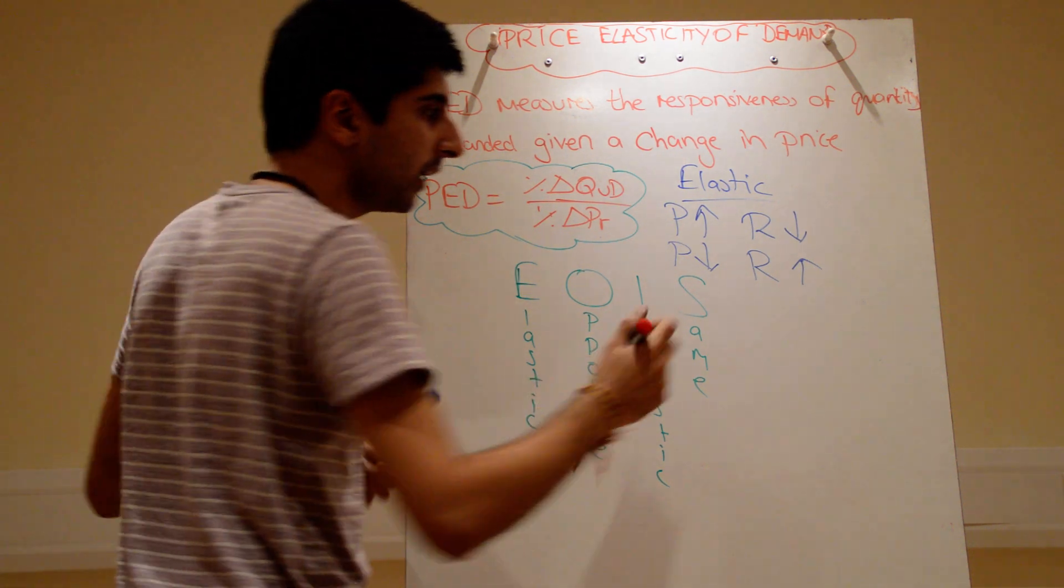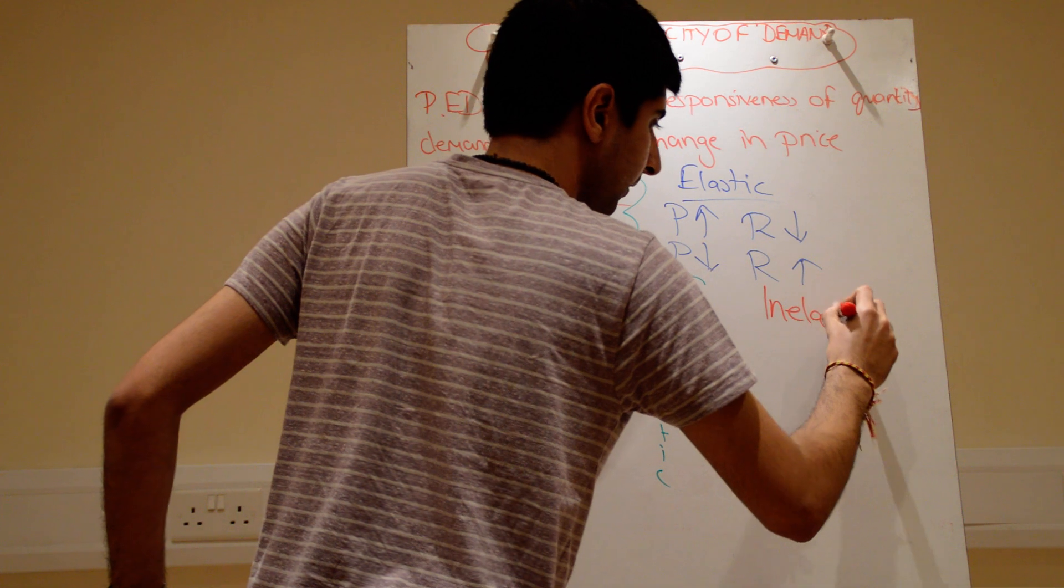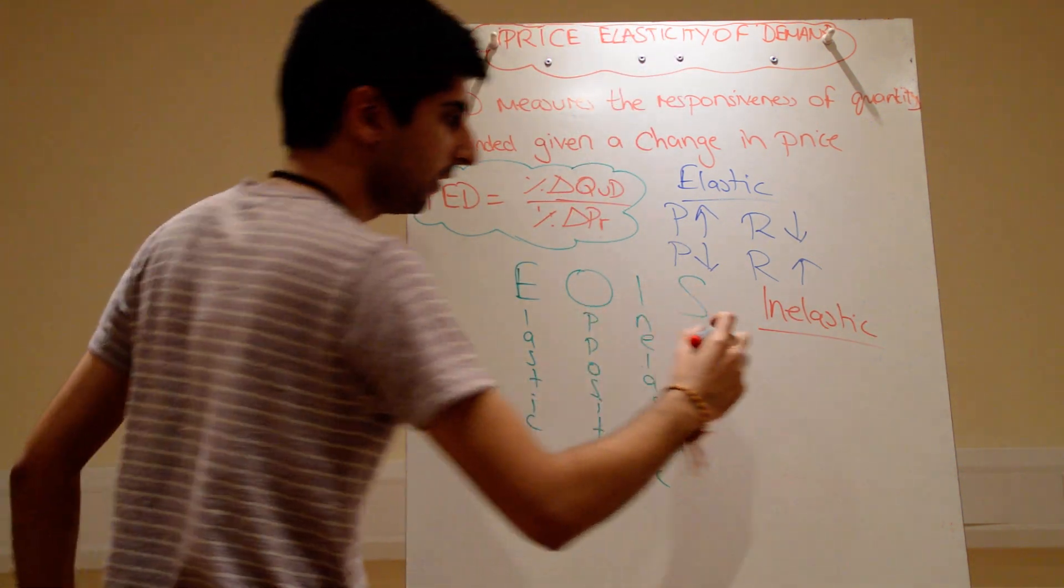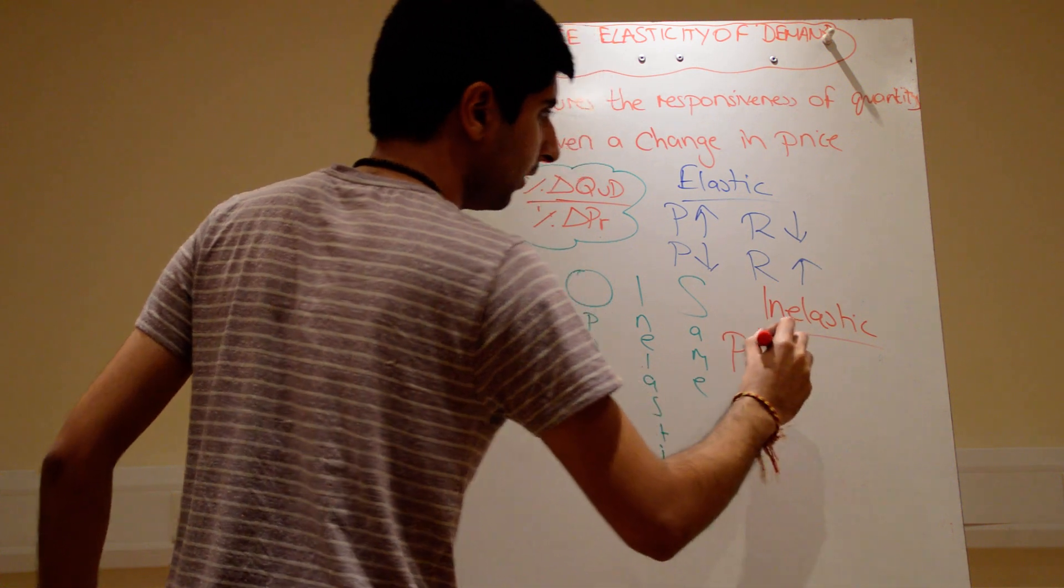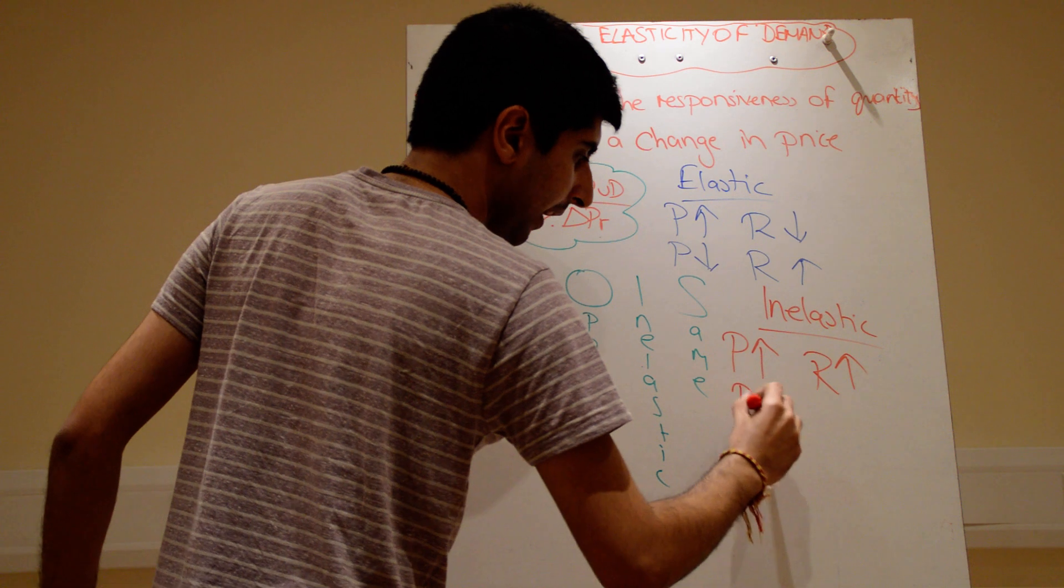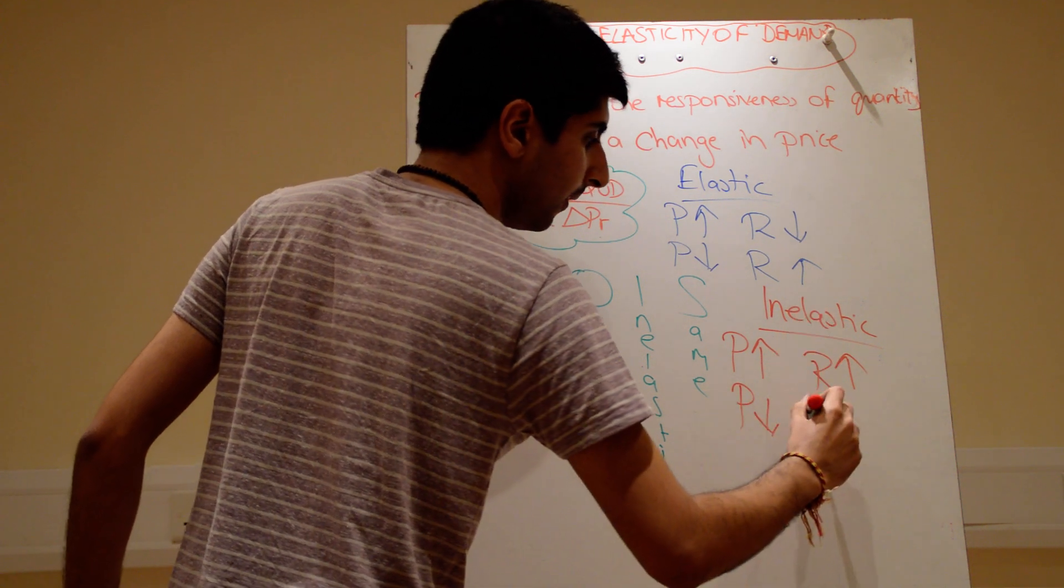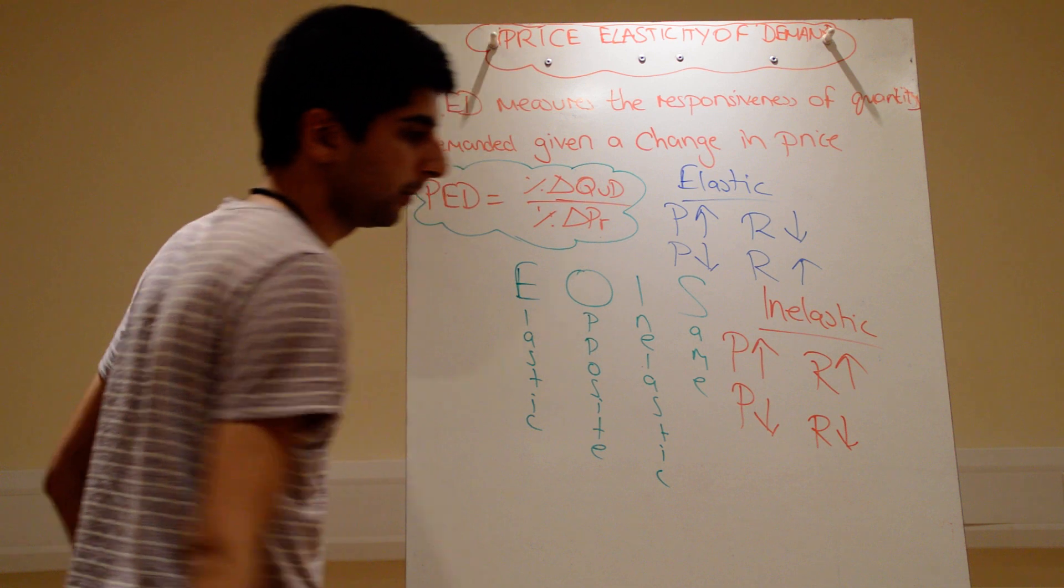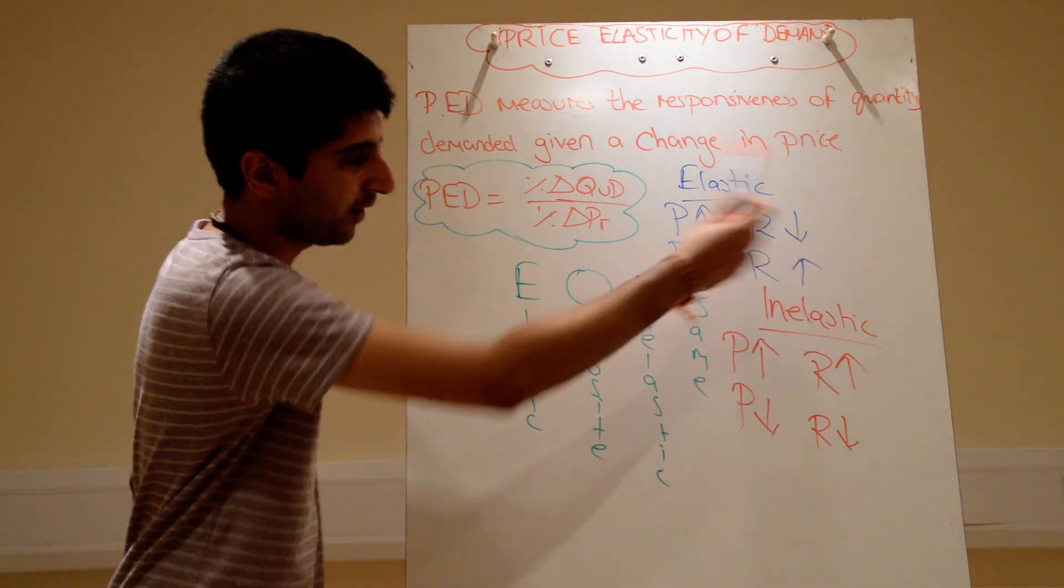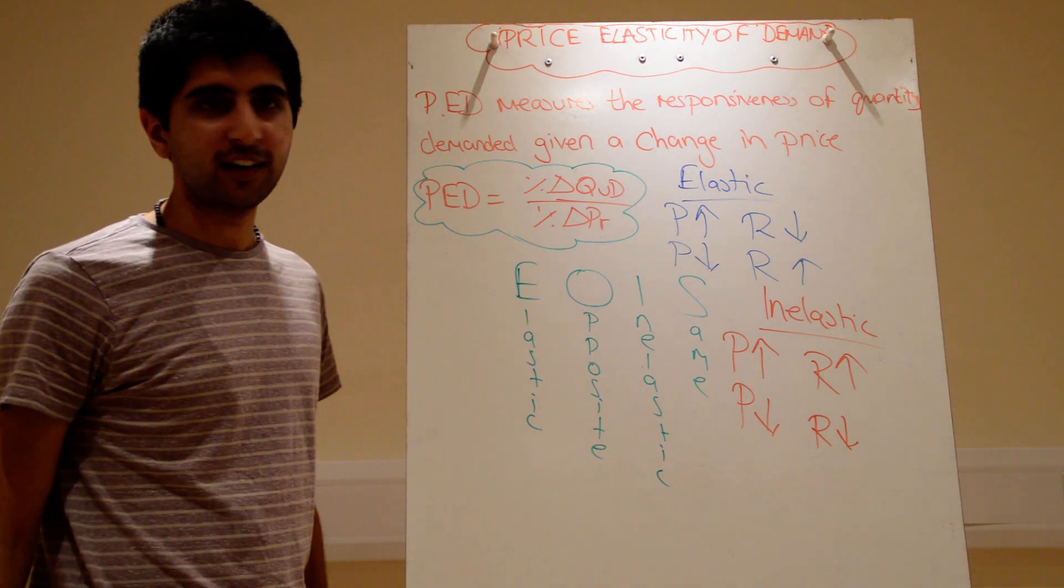Let's say you know that demand for a good is price inelastic, in which case it's going to be the same relationship. So let's say the price goes up, revenue is going to go up. If the price goes down for an inelastic good, revenue is going to go down. That's the beauty of elastic only irritates skin. It gets you straight to that without you having to think about it.